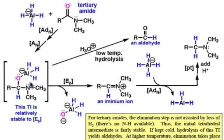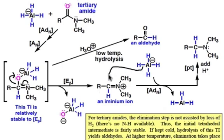However, at high enough temperature, the nitrogen can use its lone pair in a beta elimination step and kick out the aluminum oxide species in a similar fashion. This creates the aminium ion. This aminium ion is then susceptible to nucleophilic attack by a second equivalent of hydride in an AdN step, which then creates the tertiary amine shown here.